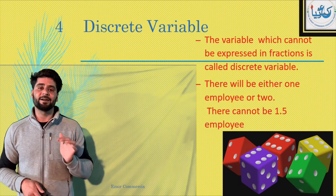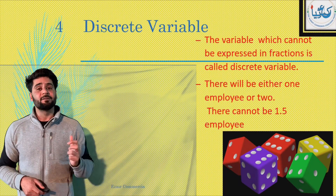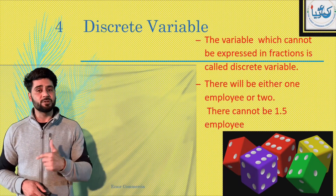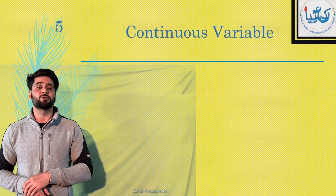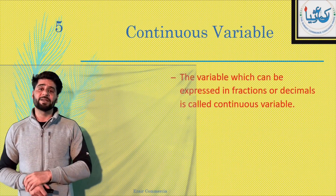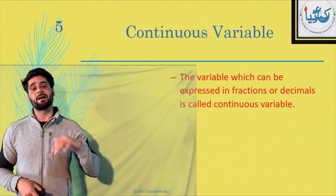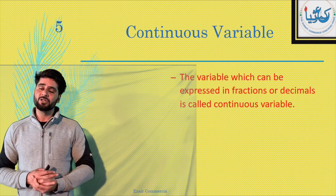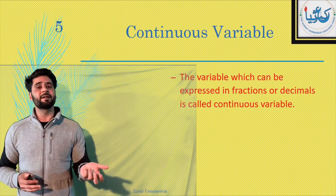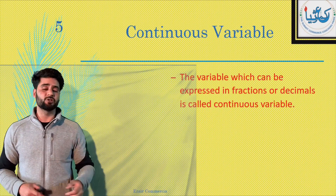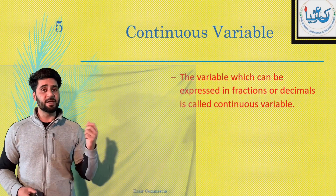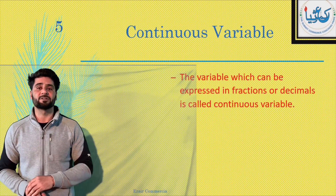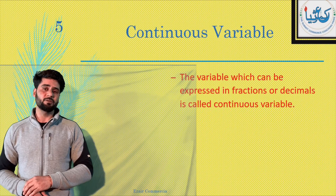And on the other hand, there is continuous variable. The variable which can be expressed in fractions — that's what you call the continuous variable. Wo variable joh hum express kar sakti ho fractions mein ya decimals mein, usi kehte hai continuous variable. Discrete variable wo variable hota hai joh hum express nahi kar sakti hai fractions mein, aur continuous variable wo variable hota hai joh hum express karthi ho fractions mein.